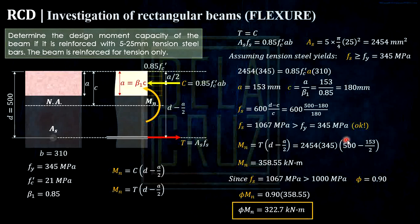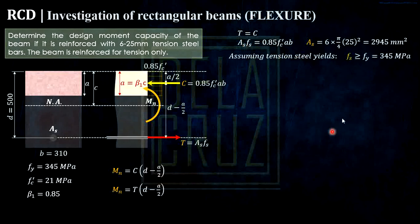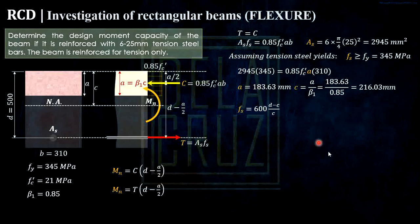The next problem: what if we add reinforcing here, make it 6 bars? What will happen to our reduction factor? The same solution: equate T and C, then compute the tension steel bars. It became 2945. Assuming tension steel yields and Fs is greater than fy, substituting, we can solve A. Then compute C. Solving C, that is 216.03. Then we'll prove this assumption by calculating the actual stress. The actual stress is 788.67 megapascal and that is greater than our fy. Therefore the assumption is correct.